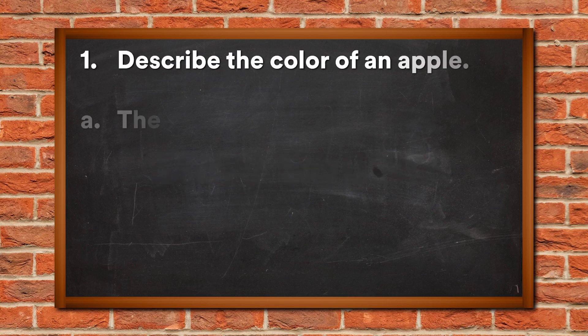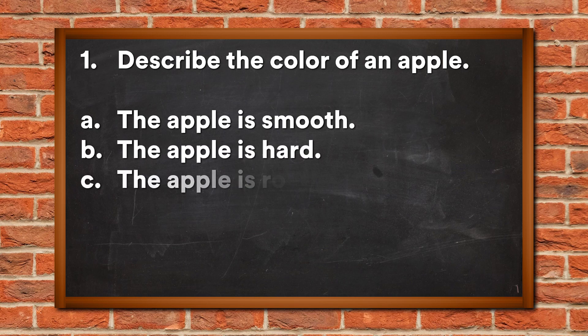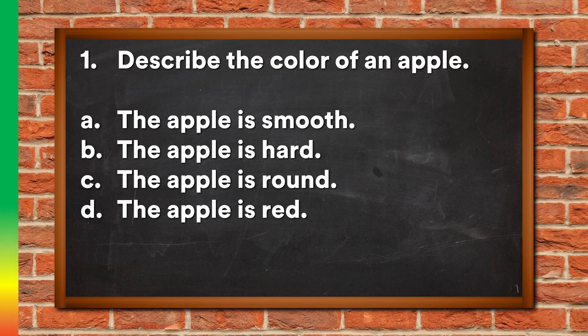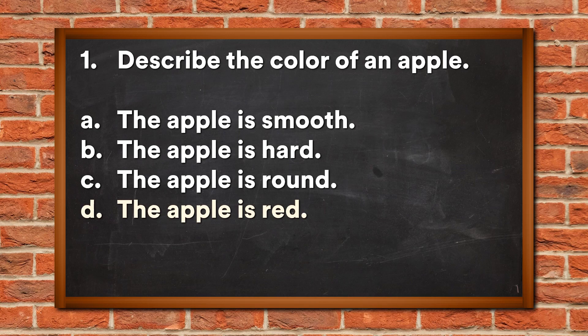Question 1: Describe the color of an apple. A. The apple is smooth, B. The apple is hard, C. The apple is round, D. The apple is red. The answer is D, the apple is red.